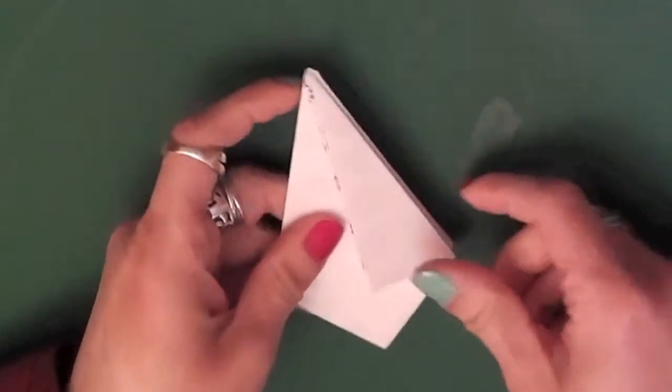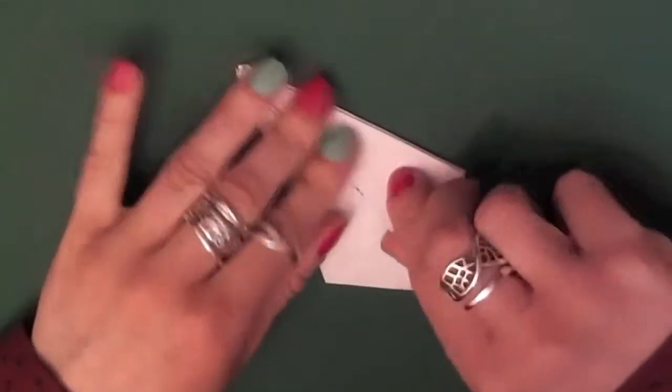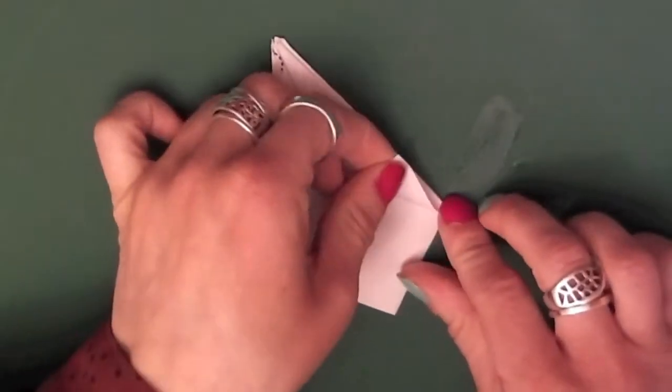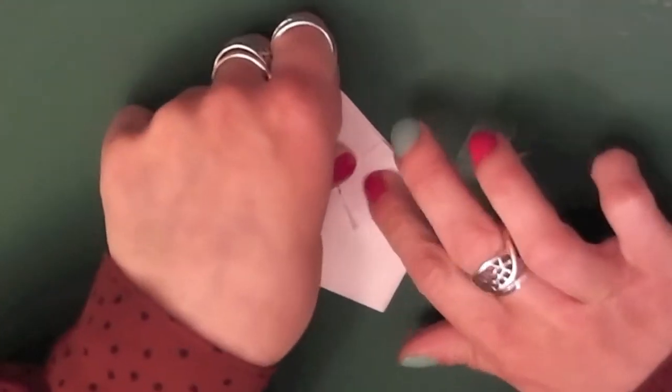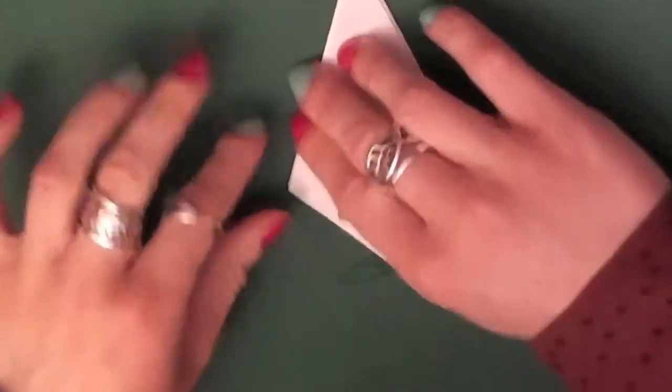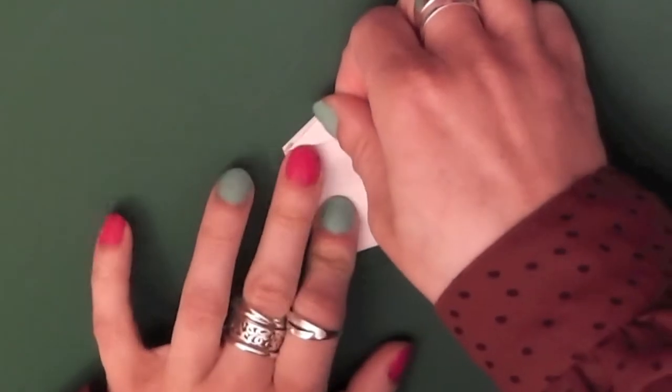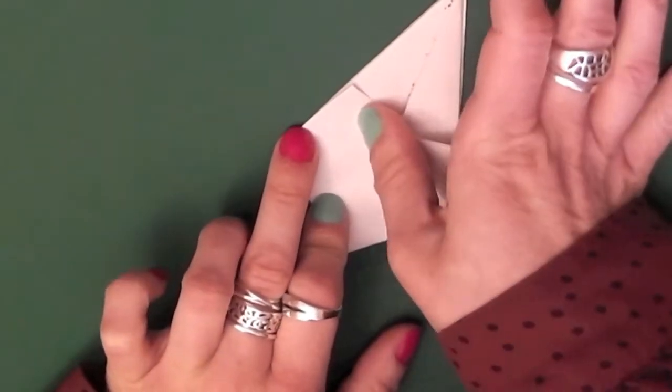So what you've got? You've got a long diamond shape. What you want to do now is just fold this leaf flap up, like that. Repeat it. Again, on the other side.